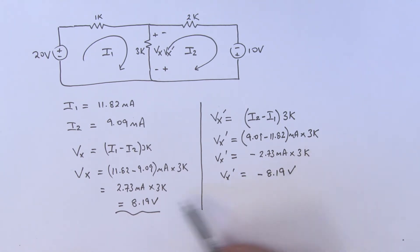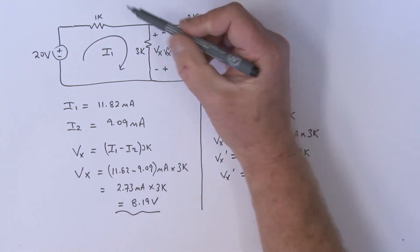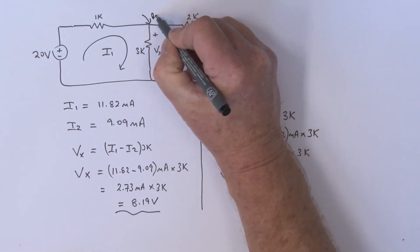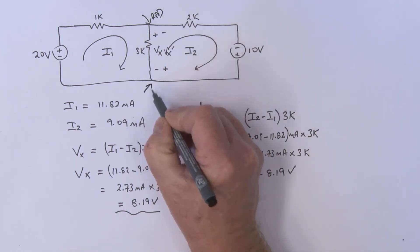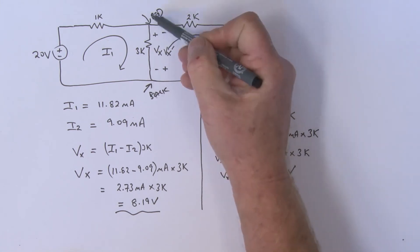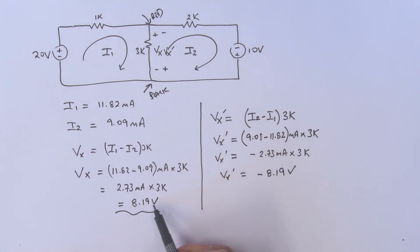Well, think about it. If I were to take a meter and put my red lead over here and my black lead over here, I would be measuring in this case 8.19 volts, and I'd also be measuring plus 8.19 volts in the second case over here.